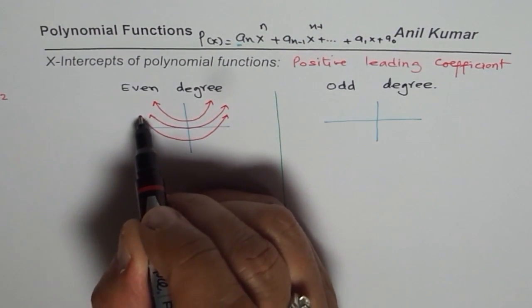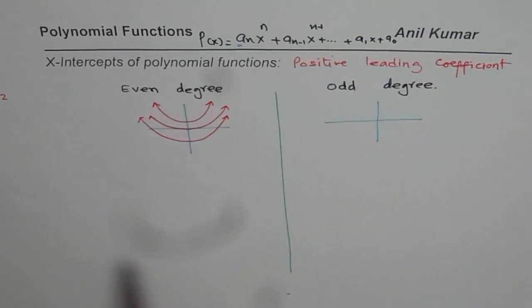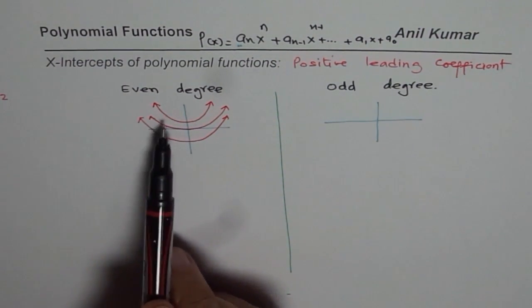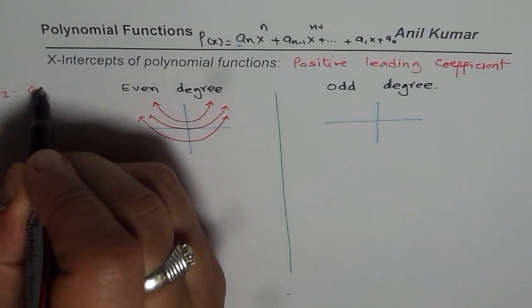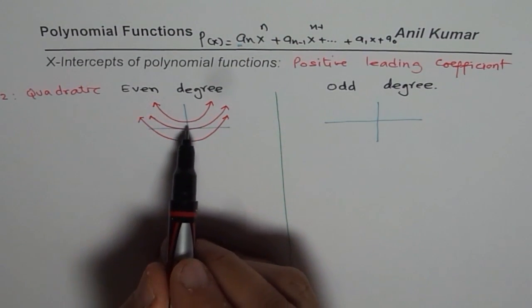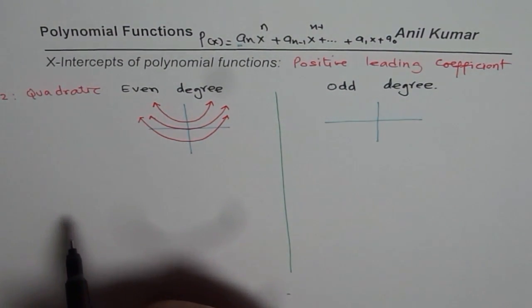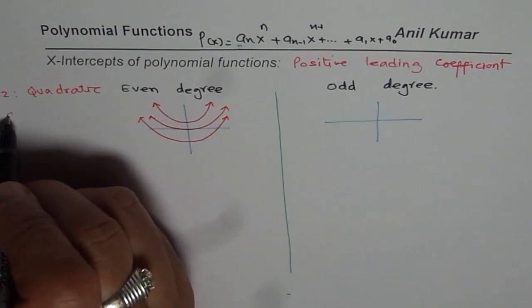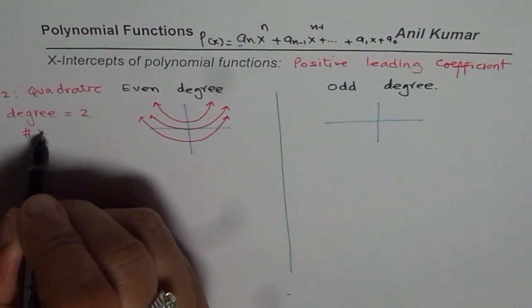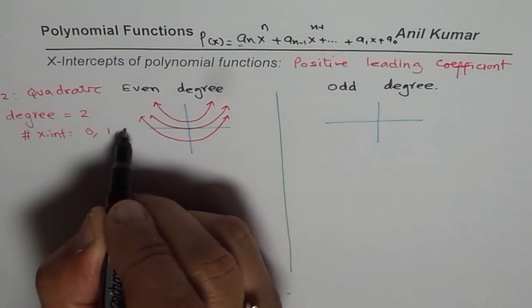We are exploring x-intercepts of polynomial functions. For an even degree polynomial — considering degree 2, a quadratic function — in a quadratic function there could be no x-intercept, one x-intercept, or two x-intercepts. So when the degree equals 2, the number of x-intercepts is 0, 1, or 2.